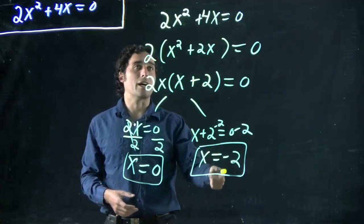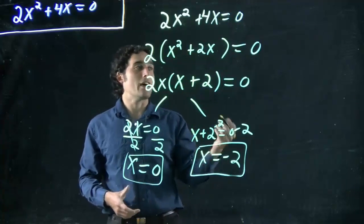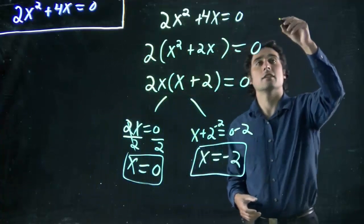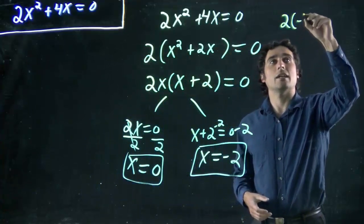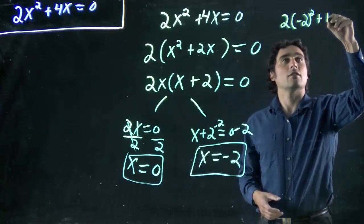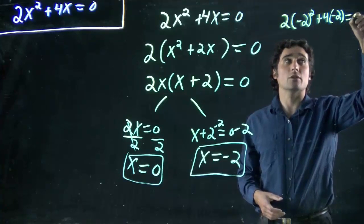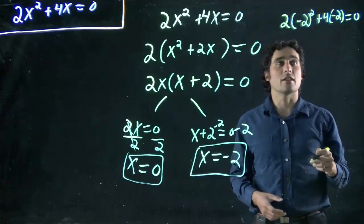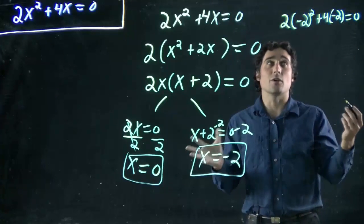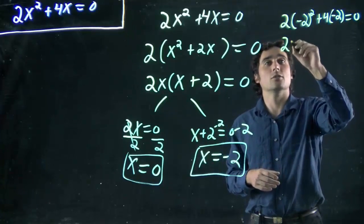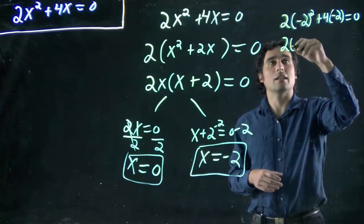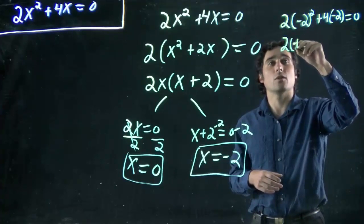Whereas if I plug in -2, let's do it right here off to the side. 2(-2)² + 4(-2) should equal 0 according to our equation there. And we said this is a solution, so it better work out.